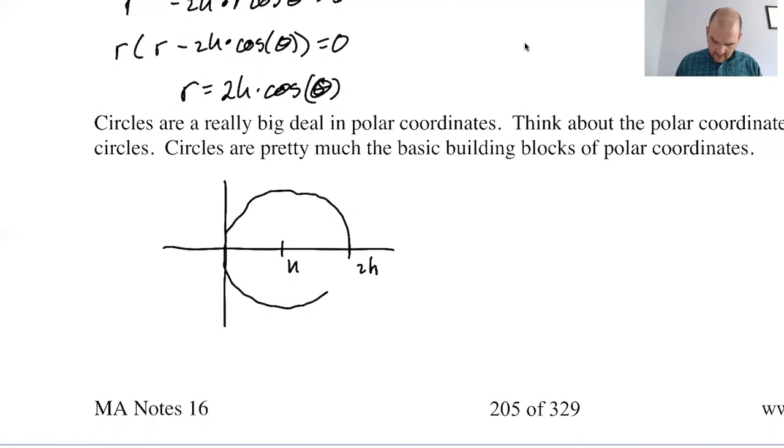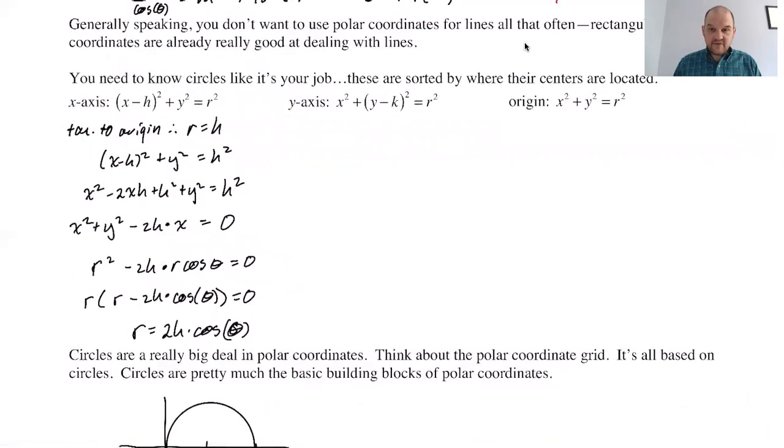So since it's tangent to the origin, this is h, and this would be 2h. I think if I hold this, it'll turn into a circle. How nice is that? So there you go. It's 2h is the diameter. If h is negative, I'll just be on the other side. And so that's how it was working out. So it always works that way. So that's definitely worth memorizing.